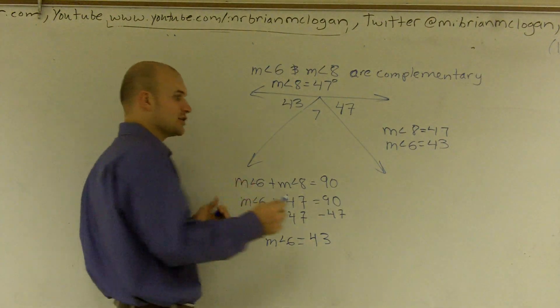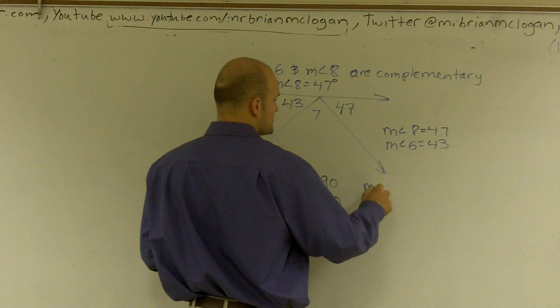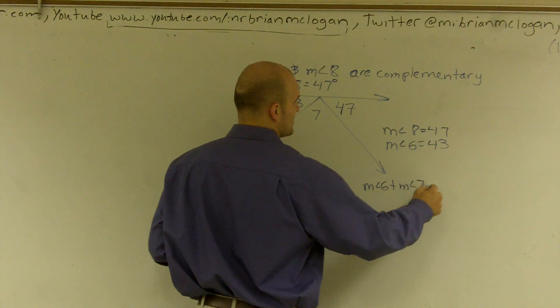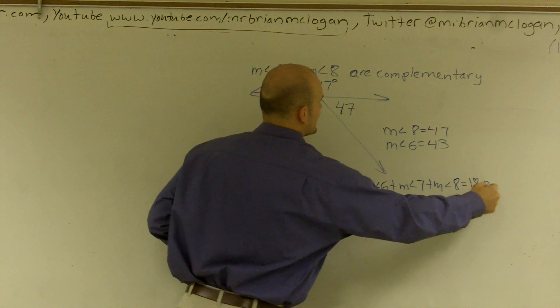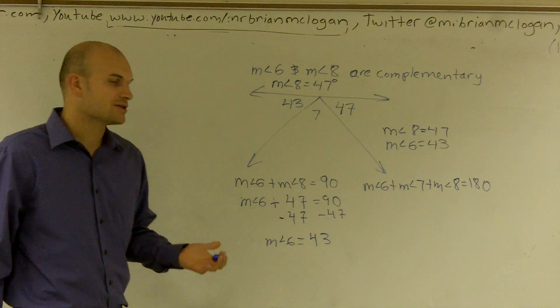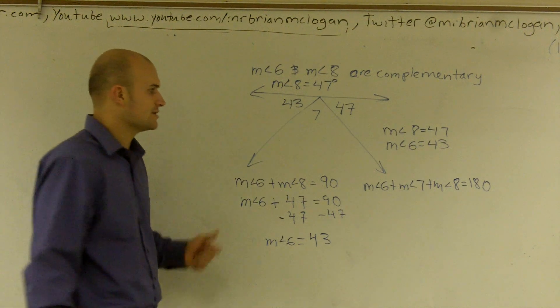So I can write another equation saying that measure of angle 6 plus measure of angle 7 plus measure of angle 8 equals 180 degrees, because that's what the measure of a straight angle is.